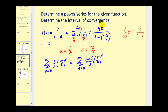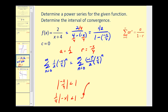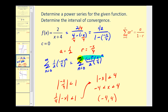To determine the interval of convergence, the absolute value of r must be less than one. So the absolute value of negative x over four must be less than one. Factoring out one-fourth and multiplying both sides by four gives us that x must be greater than negative four and less than four — the open interval from negative four to positive four.